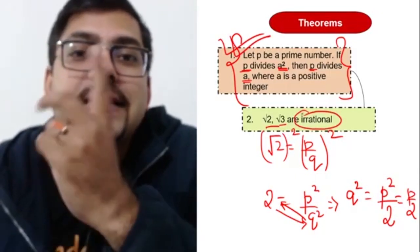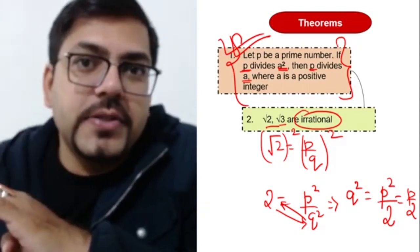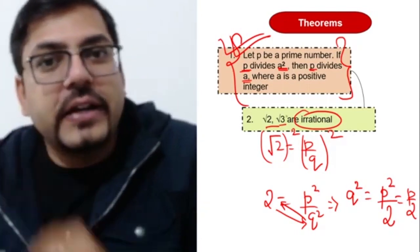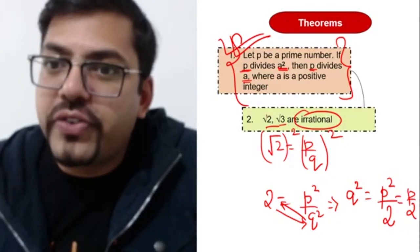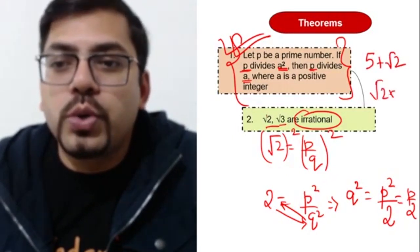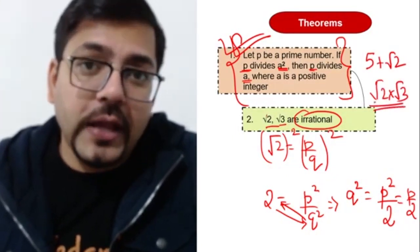So this is the second most important topic of this chapter: proving irrational numbers, proving irrationality. So it's not only restricted to proving root 2 irrational or root 3 irrational. Questions could be even like 5 plus root 2 irrational or root 2 into root 3 irrational - any of these questions could be there.